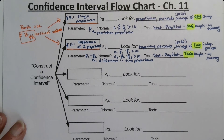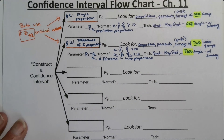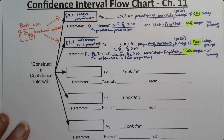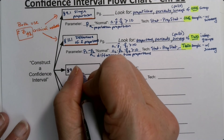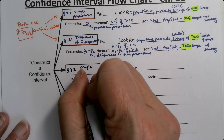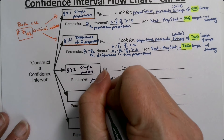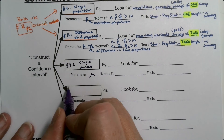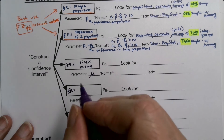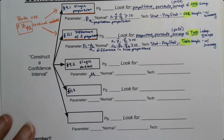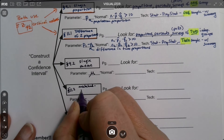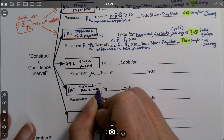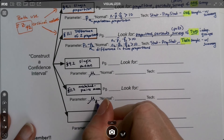Now for the three confidence intervals for means: we have one for a single mean, one for the mean of matched pairs, and one for the difference of two means. The single mean interval uses parameter mu, and the matched pairs mean uses mu with a little d — where d stands for the differences.